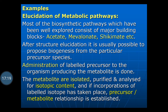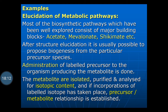Examples for the elucidation of metabolic pathways in plants: most of the biosynthetic pathways which have been well explored consist of major building blocks such as acetate, malonate, and shikimate. After structural elucidation, it is usually possible to propose biogenesis for the particular precursor species. Administration of the labeled precursor to the organism producing the metabolite is done; the metabolites are isolated, purified, and analyzed for isotopic content. If incorporation of the labeled isotope has taken place, the precursor-metabolite relationship can be established.